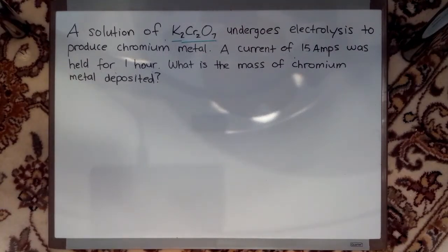Here we have K2Cr2O7 and we're applying a current to it. We hold that current for one hour and we get some chromium metal out of it. Now people are obsessed with using equations to solve these problems. I'm going to show you that it has nothing to do with an equation. All you do is look at the units of what you're given and you can solve the problem really easily.